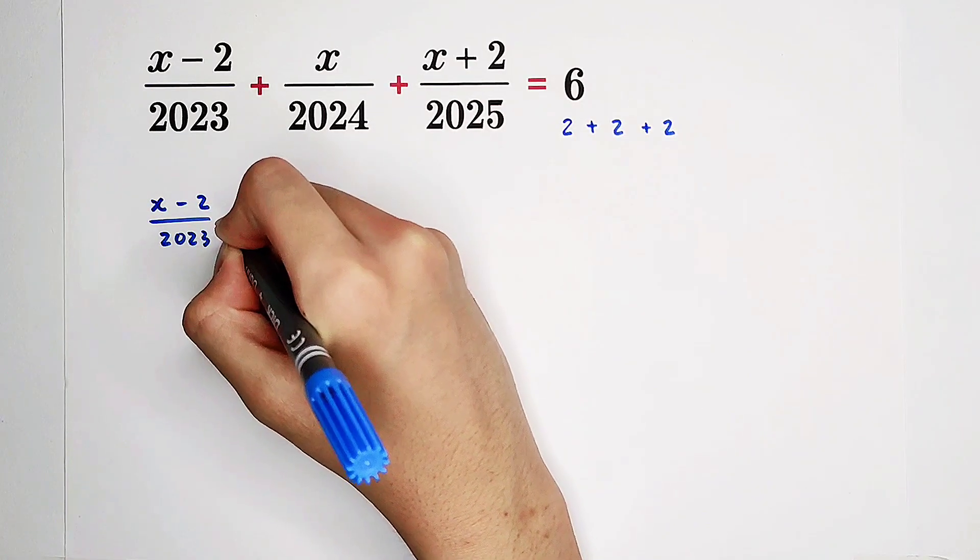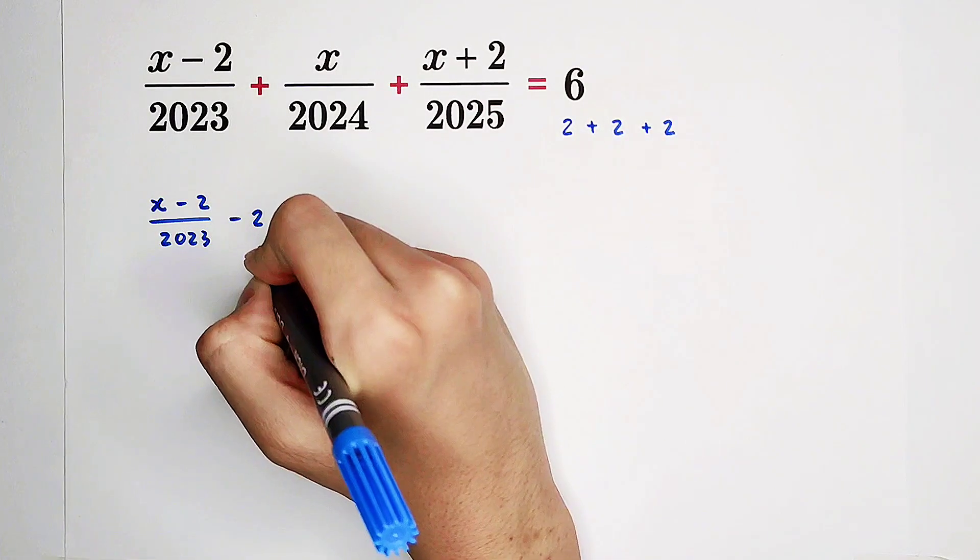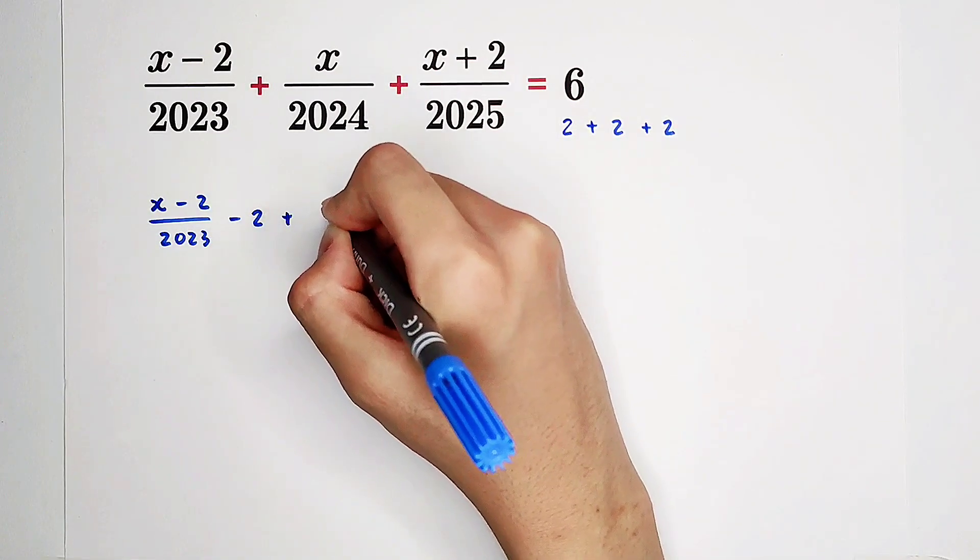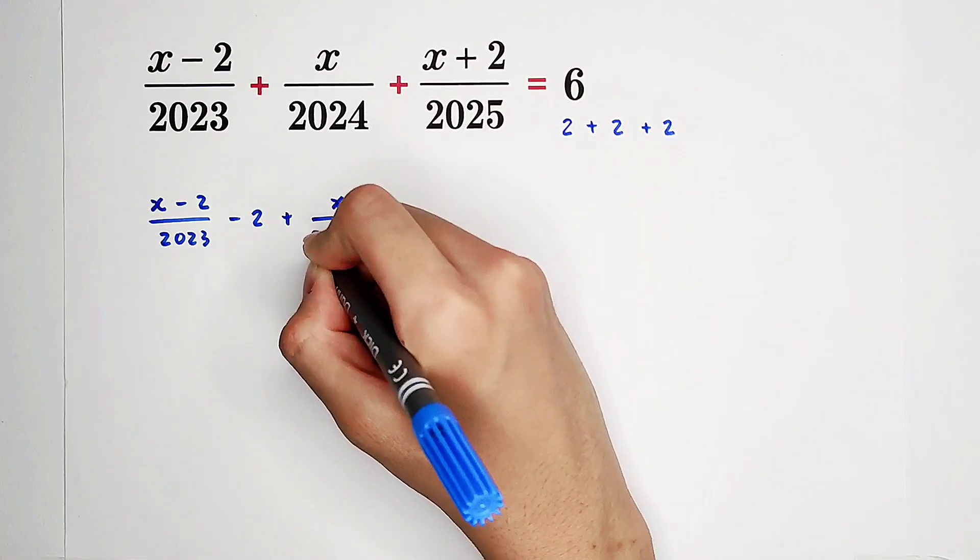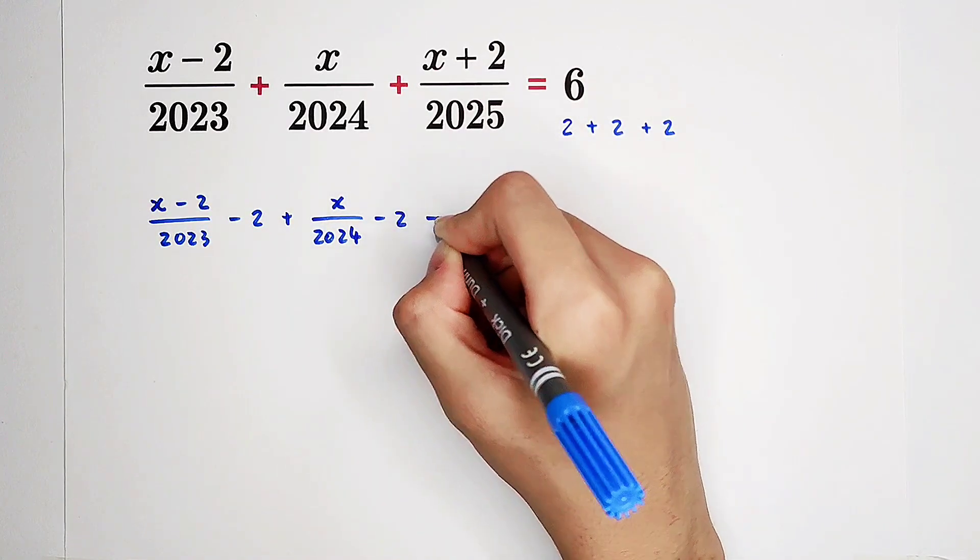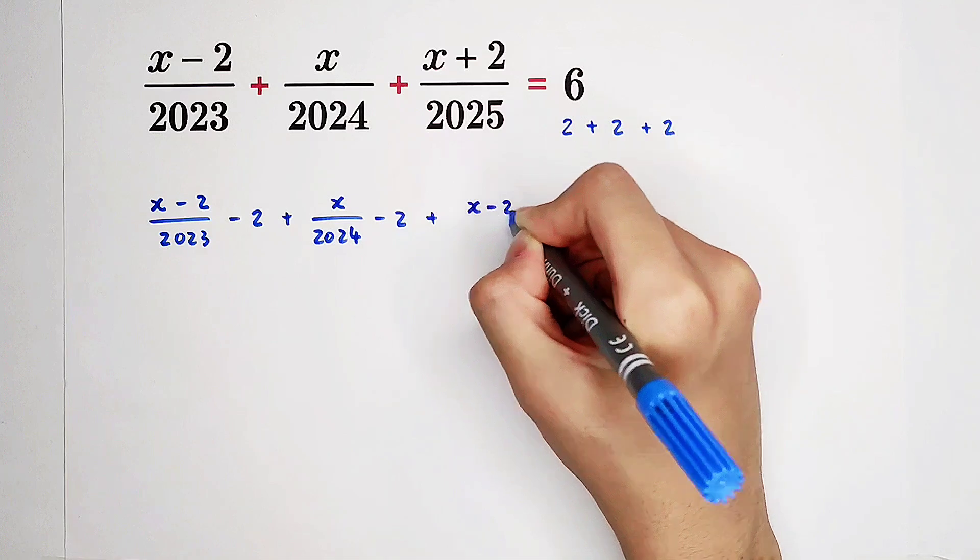Firstly, give this term a two. So that will be minus two because it's on the left-hand side, plus X over 2024 minus two, and then plus X minus two. Oh, sorry.